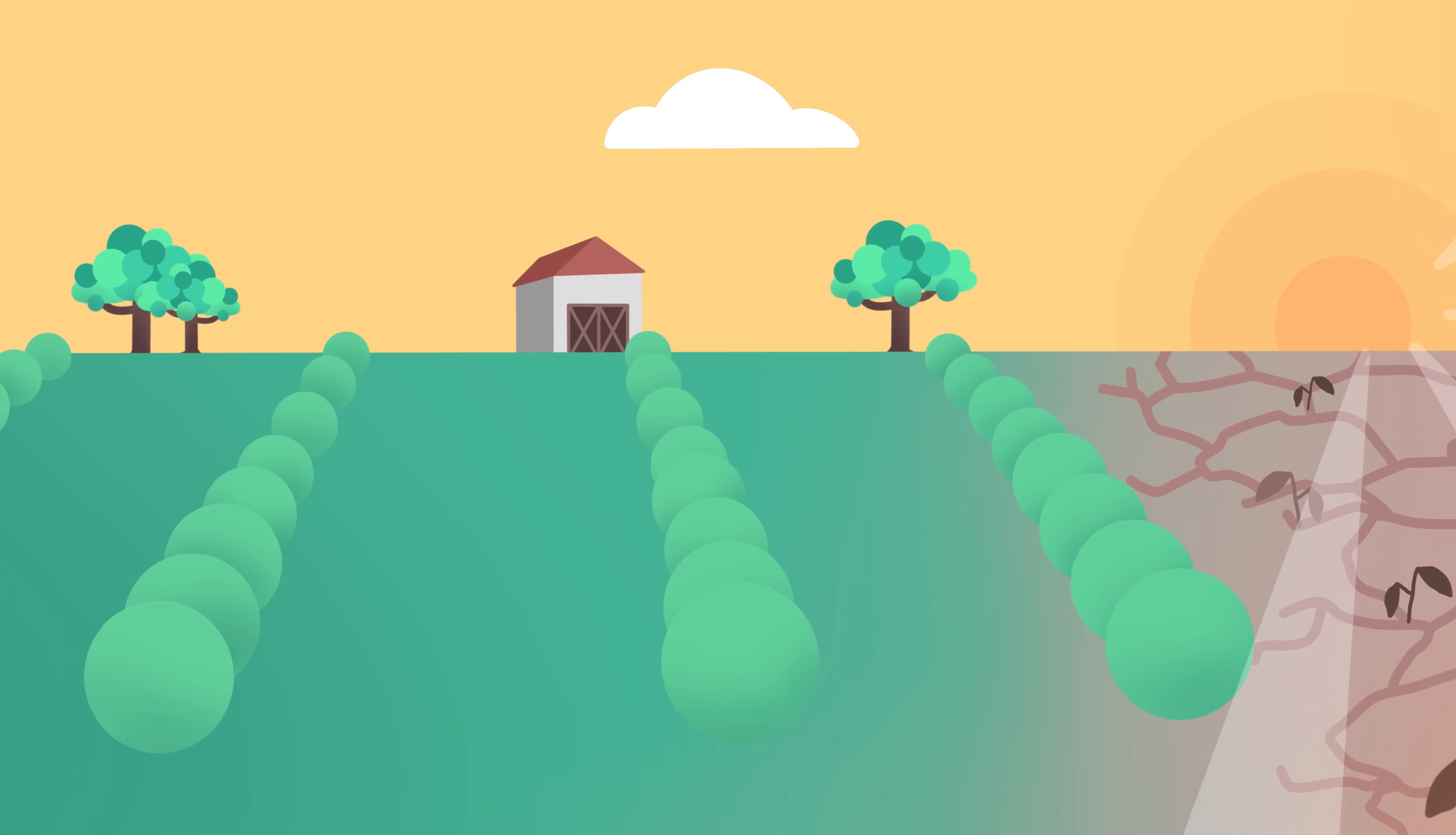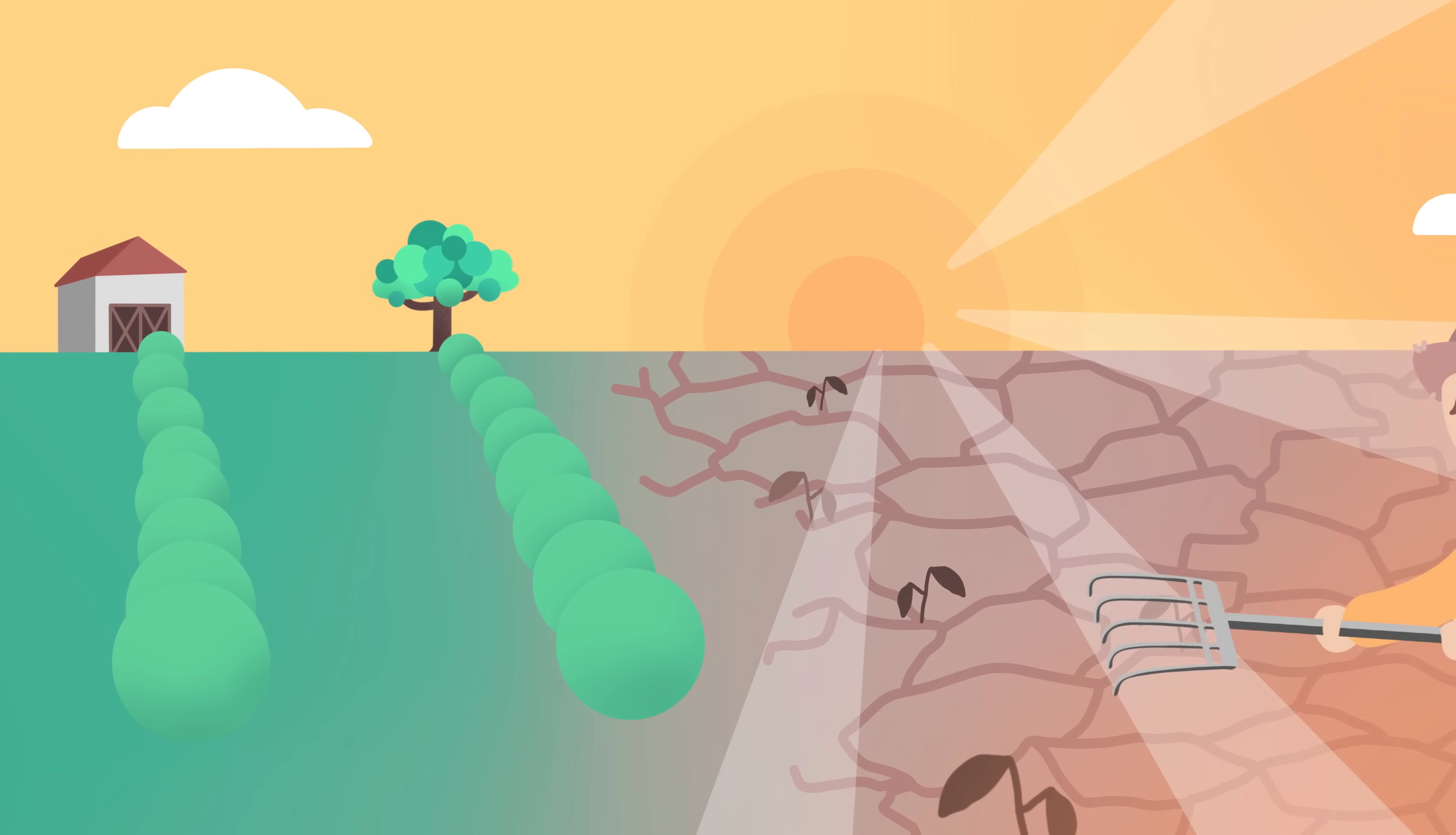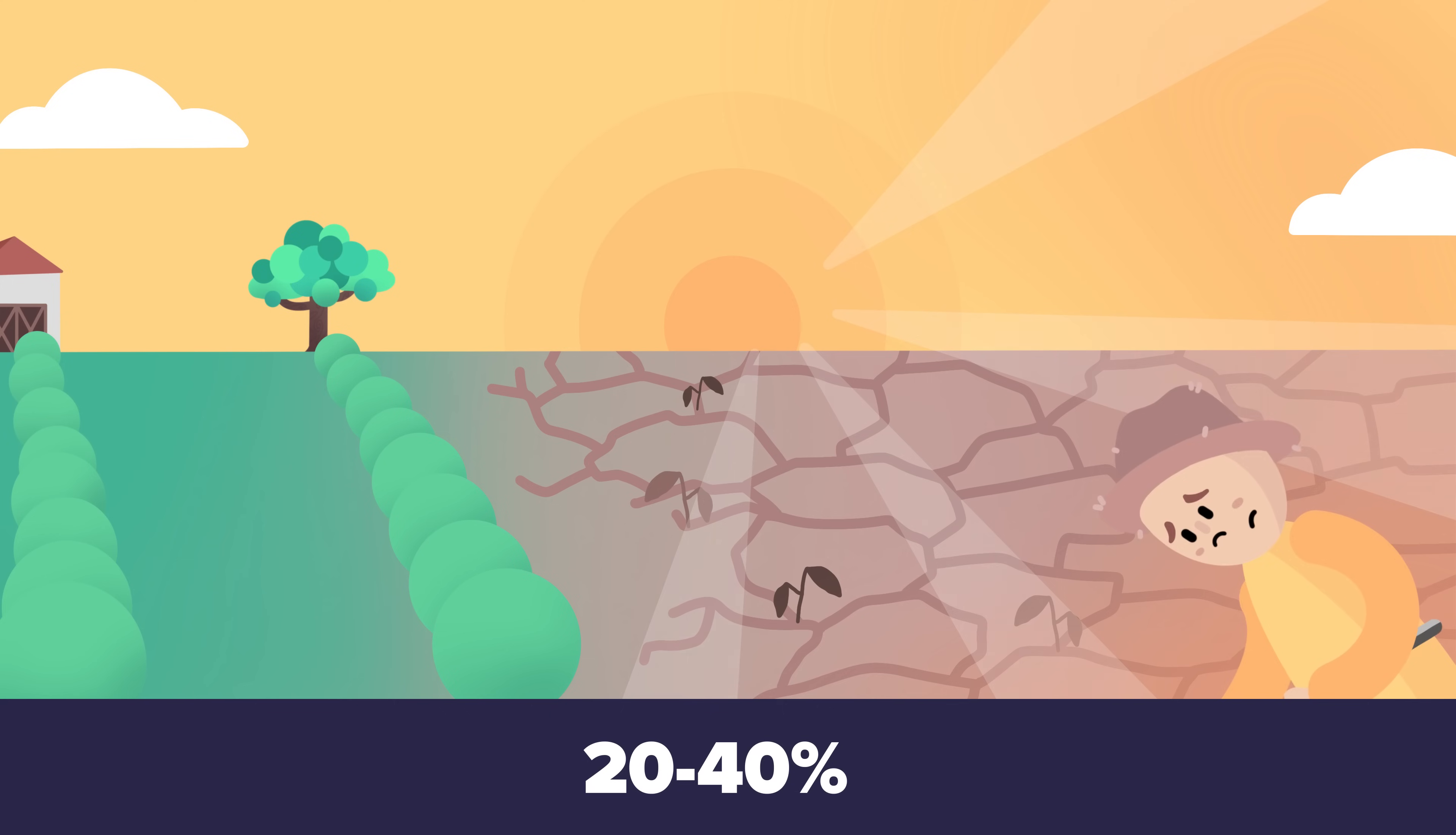Suboptimal conditions, such as not enough water and too much heat, significantly reduce the growth potential of food crops. And 20-40% of crops globally are lost to insect pests, weeds, and diseases.